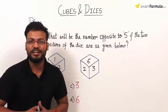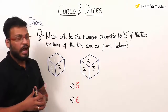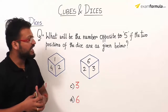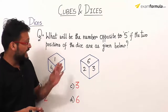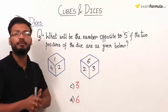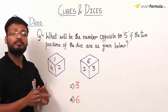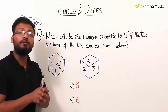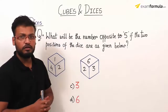Now let us consider the next problem. It says: what will be the number opposite to the number 5, if the two positions of a dice are as given below? One dice has been represented from two different angles with certain numbers appearing on the faces.